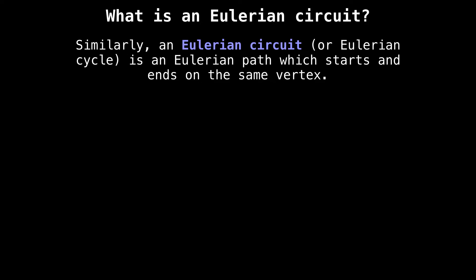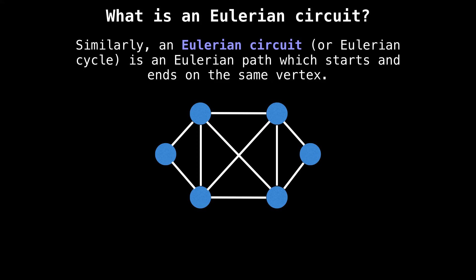Moving on, let's talk about Eulerian circuits, also called Eulerian cycles. An Eulerian circuit is an Eulerian path which starts and ends on the same vertex. So similar to Eulerian paths, not every graph has an Eulerian circuit, but the following graph does. If you know your graph has an Eulerian circuit, then you can begin the circuit at any node. I'm going to begin the circuit on the orange node, and also end it on the orange node. And that's the full circuit.